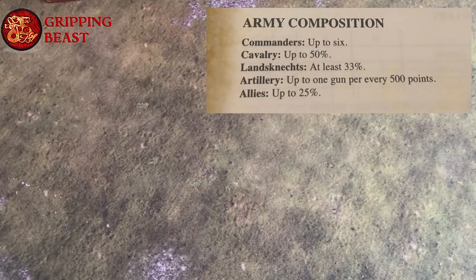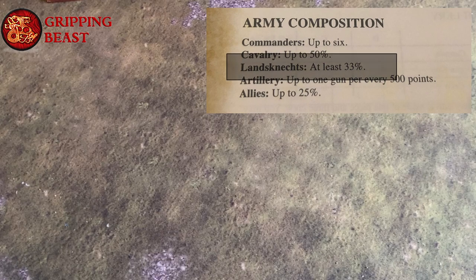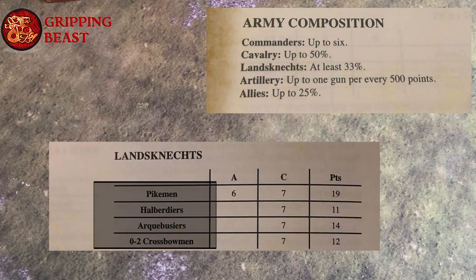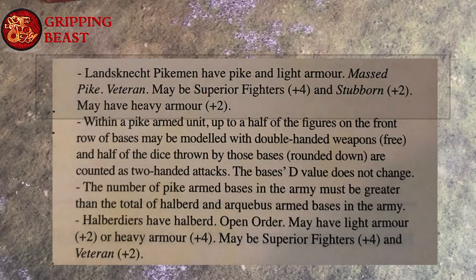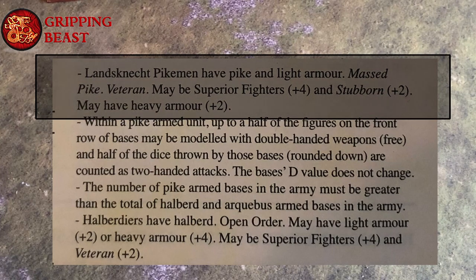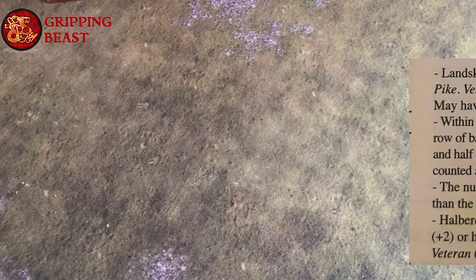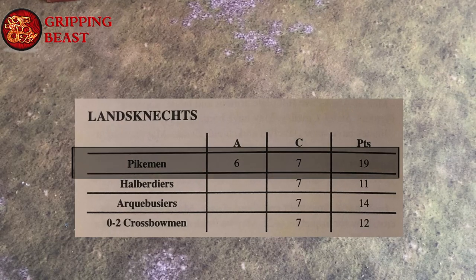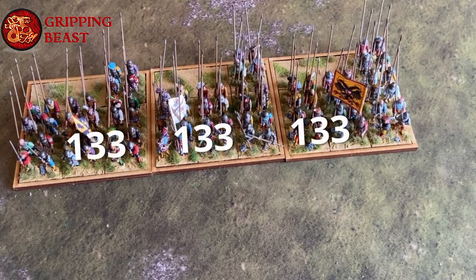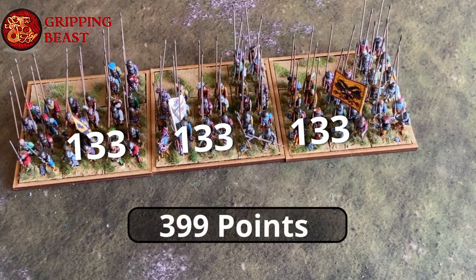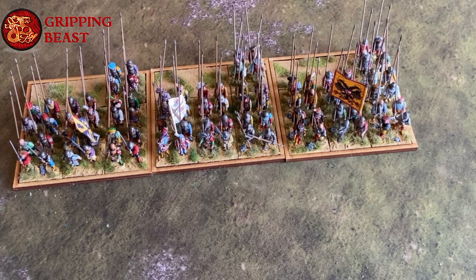It's time to add some infantry. We know from our army composition that we must have at least 33% Landsknechts. Our options are pikemen, halberdiers, arquebusiers and crossbowmen. I'm going to start with some formed infantry and take some pikemen. They will have a pike, light armor, massed pike and veteran. They have a base cohesion of seven and cost 19 points each. I'm going to take three units with seven bases in each, so that's 133 points per unit. Three units will come in at 399 points, which is over the 33% minimum that we require.